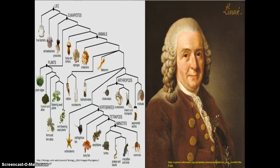Started by Carl Linnaeus in the mid-1700s, animal taxonomy has been a constant topic of discussion in the scientific world. Originally, taxonomic differences were based on phenotypic variations in animals, but thanks to DNA, taxonomy can now be redefined based on genetic differences.